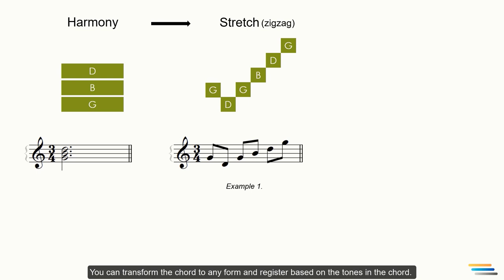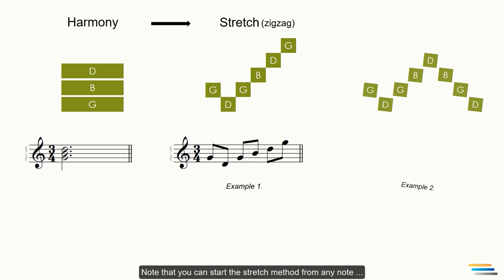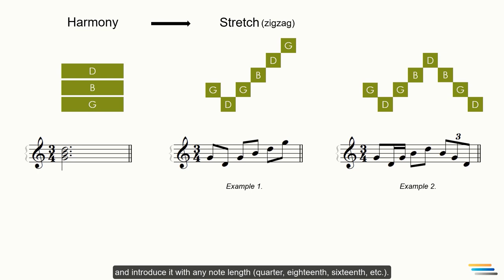The movements are free, that is, you can do it down or up. As you can see, I used the G note three times, the D note two times, and the B one time. Note that you can start the stretch method from any note and introduce it with any length, quarter, eighth, 16th, etc. But don't think of this method as playing the arpeggios as I will show you the different types in future lessons. This is simply a zigzag variation of the stretch method.